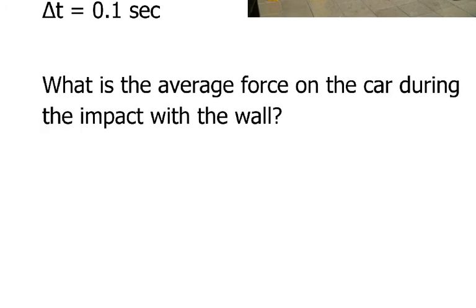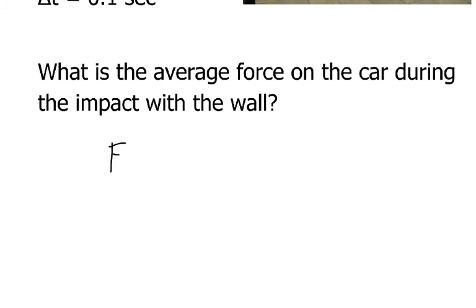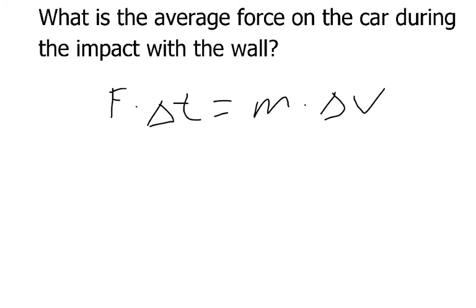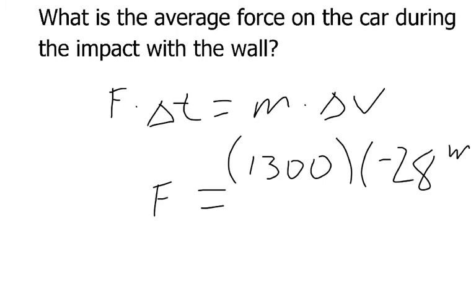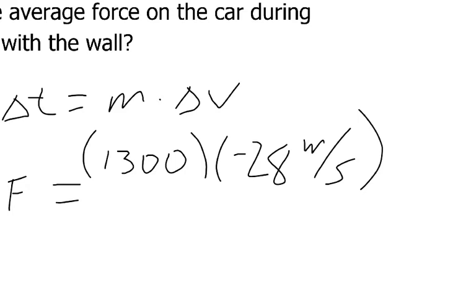So let's do a calculation. What is the average force on the car during the impact with the wall? Alright, so we have average force times change in time equals mass times change in velocity. So that means the force, if we get all of our numbers written down here, is going to be equal to 1,300 kilograms multiplied by the change in velocity, which is going to be negative, I guess, since we're decreasing in velocity - 28 meters per second - divided by the change in time, which was 0.1 seconds. So there we go.